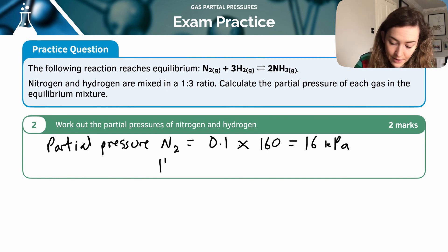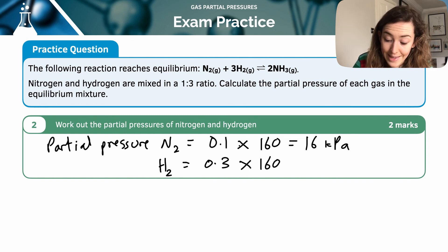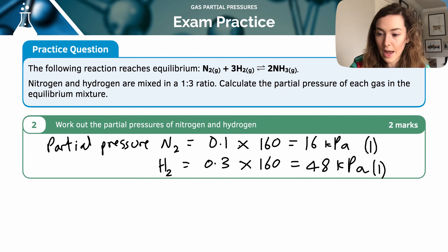And then the same calculation for my hydrogen, but I've got 0.3 as my partial pressure of hydrogen, again times the total, which is 48 kilopascals. And each of those would be a mark. And from my previous section, I would have gotten a mark for the calculations to work out my molar fractions.